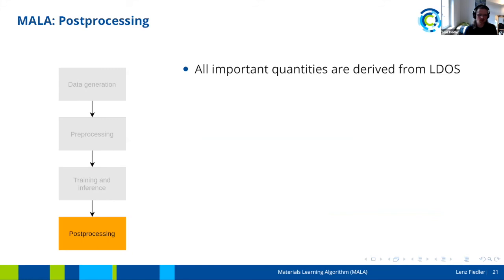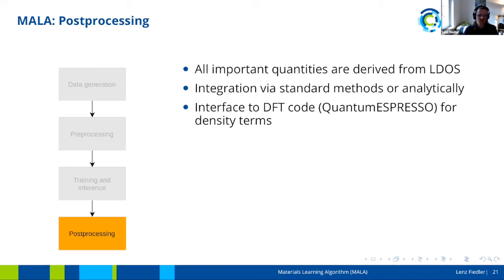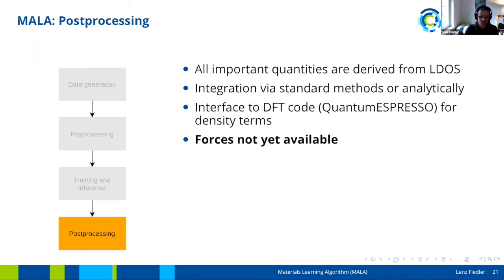After training the model and performing inference, all important quantities are derived from the predicted LDOS. Some integration has to be performed, which can be done via standard numerical integration or analytically — for the band energy and entropy there exist analytical formulas. The density-based calculations are then done by interfacing with a DFT code, Quantum ESPRESSO in this case. The only problem at the moment is that forces — important for the MD workflow — are not yet implemented in MALA, though mathematically they are available. This is one of the things we're currently working on.